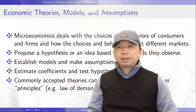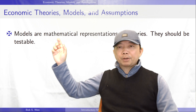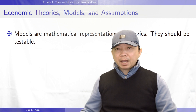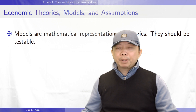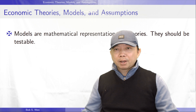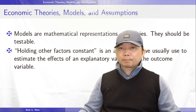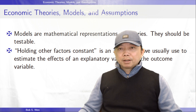Economists usually write theories in math. A model is a mathematical representation of a theory. The models should be testable, meaning that we can find empirical evidence to support or reject the theories. Various identification strategies and specification approaches developed in econometrics are powerful tools for empirical analysis. Models are usually built on some assumptions. Holding other factors constant is an assumption we use to estimate the effect of a certain explanatory variable on the outcome variable.